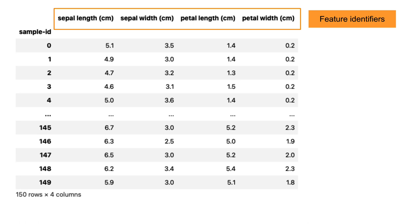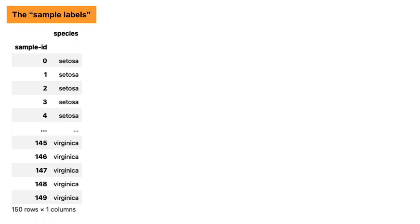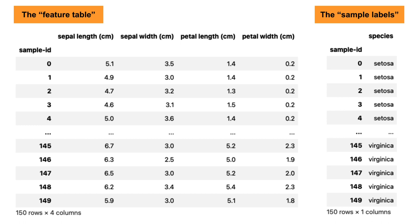Some types of machine learning methods use a second data structure called sample labels — simply a vector where sample IDs are associated with some label for each sample. In this case there are three different species of iris represented in the dataset, and the sample labels indicate the species for each sample ID. Importantly, when you have a feature table and sample labels it's essential that you have a label for all samples represented in the feature table.